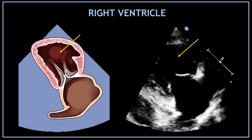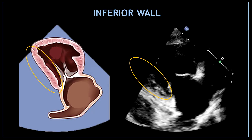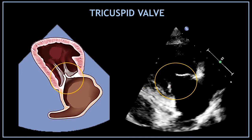Next to the wall we have this big echo-free space at the top of the view. This black space that looks a bit triangular in shape is the right ventricle. The next wall we can visualize here corresponds to the inferior right ventricular wall.